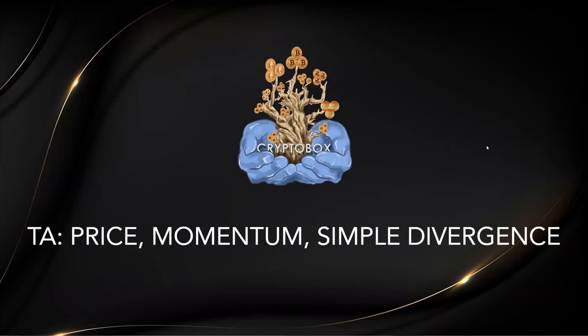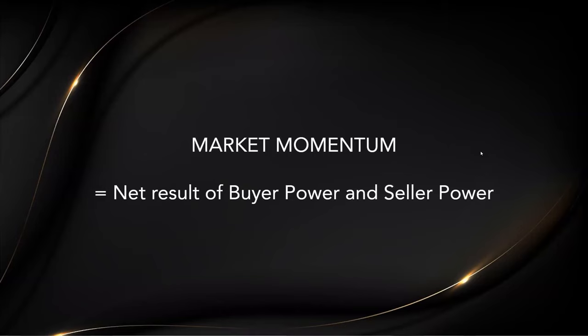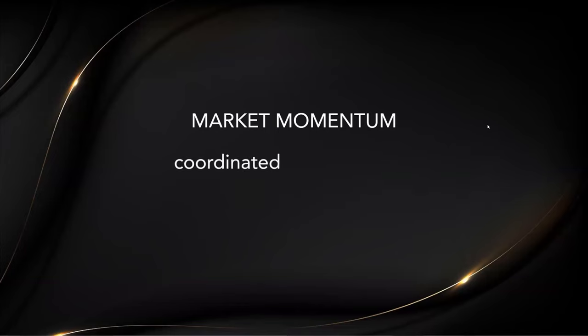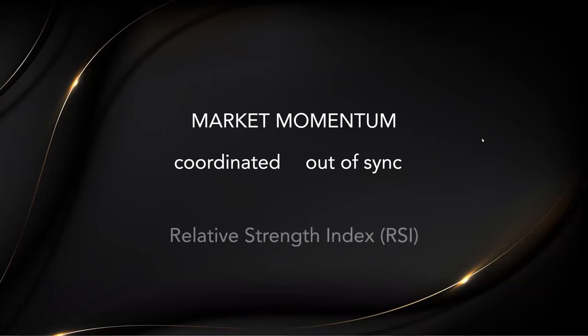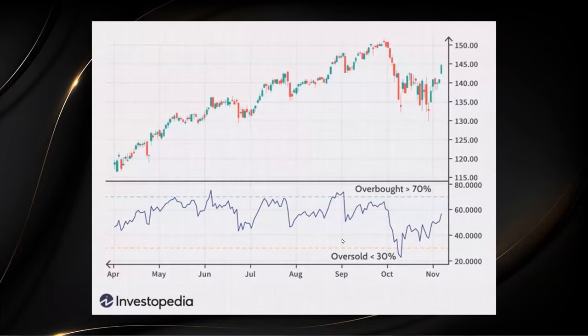Price momentum and simple divergence: from the last training we spoke about basic indicators, including the RSI. Market momentum equals the net result of buyer power and seller power. Market momentum can shift between two modes: either coordinated or out of sync. We measure market momentum through the RSI — the relative strength index — which appears at the bottom of the chart on a fixed scale of zero to one hundred.